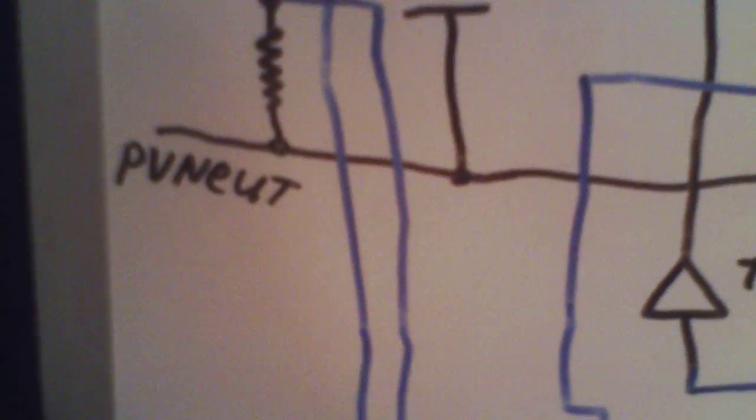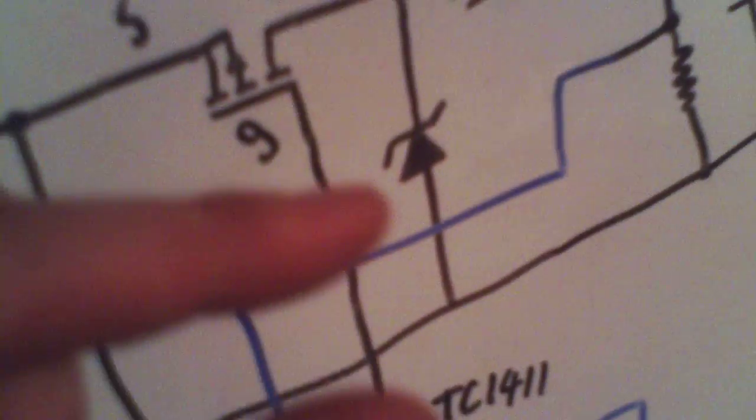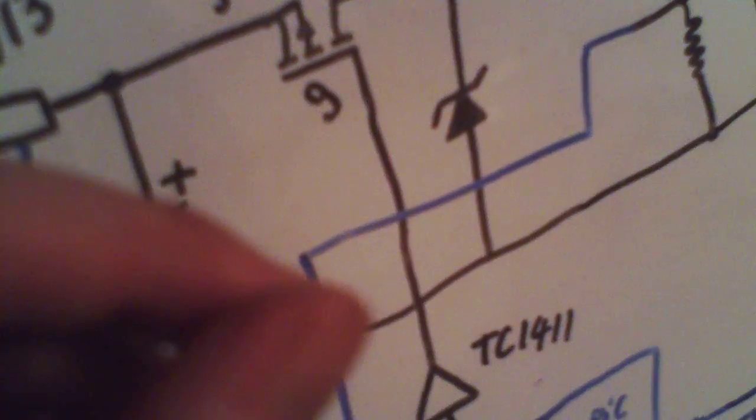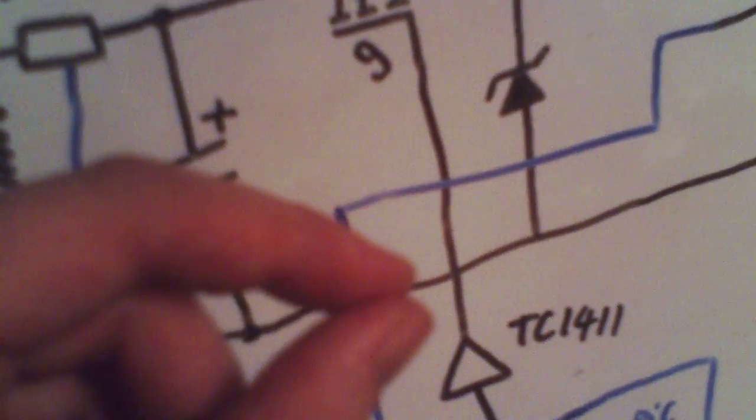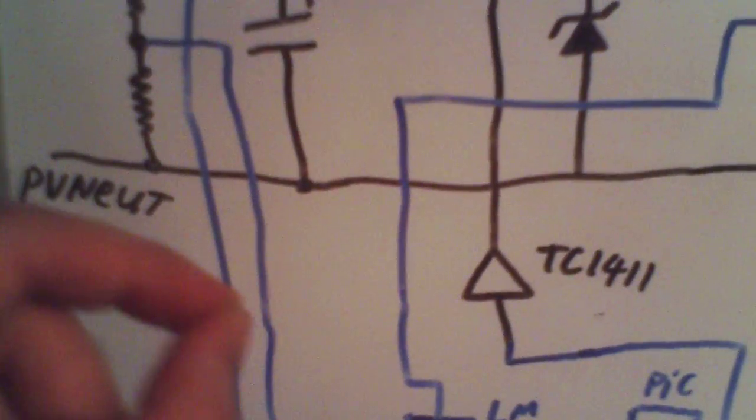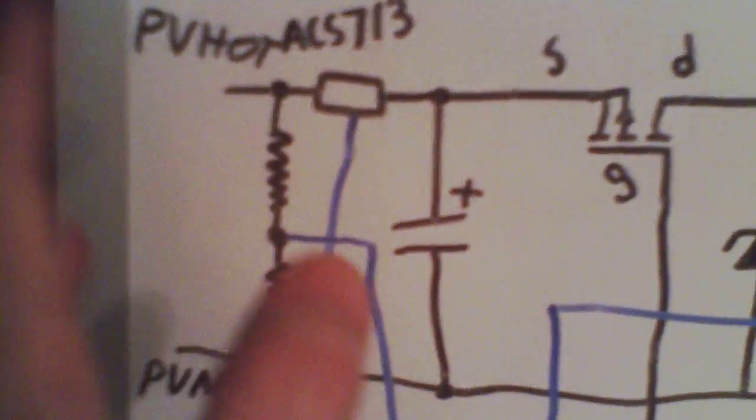So that's why I'm using that. Ordinarily in this kind of application, you can use a sensor resistor and some operational amplifiers, or specialized shunt resistor management chips. But this allows me to have a measured current without doing any of that.